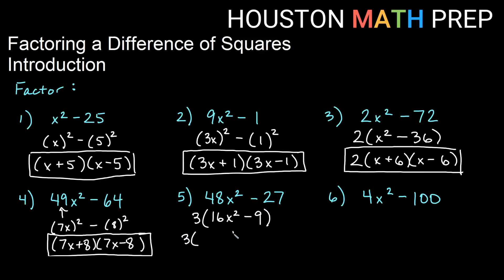So if we think about what times itself gives us 16x². 4x times 4x would give us 16x². What times itself gives us 9. 3 times 3 gives us 9. So our conjugate factors will have 4x plus 3, 4x minus 3. And we won't forget to put our GCF that we factored out at the beginning.